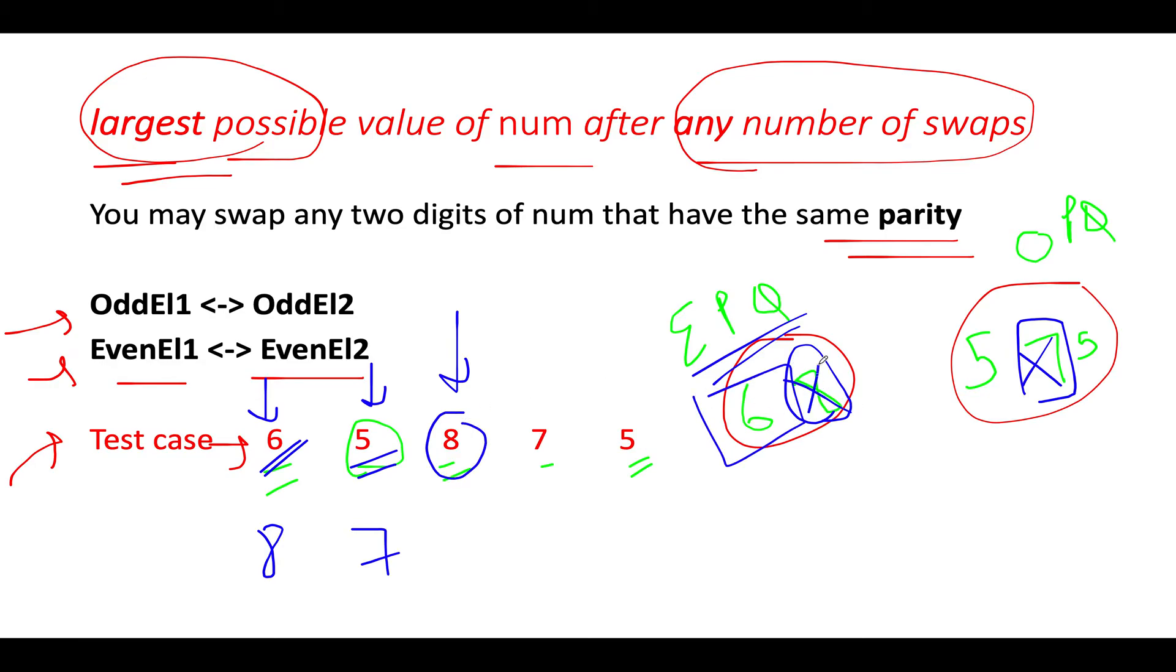Let's proceed ahead. Next we see is 7, which happens to be odd in nature. I need to look at the odd priority queue. I see 5 as the topmost element and I'll append 5 here. In the last, I again see an odd element, so I look at the odd priority queue. There's only one element left, which is 5. What have we finally built as the answer? 87655, which is in sync with the expectation.